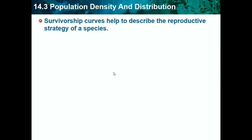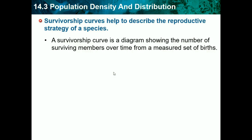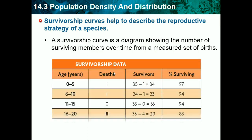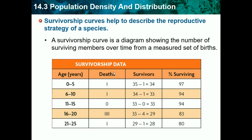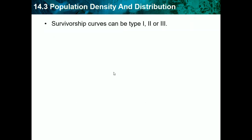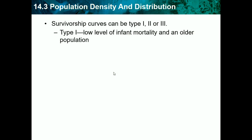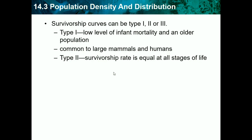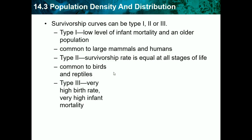Survivorship curves help describe the reproductive strategy of a species — showing the number of surviving members over time. Type 1 has low infant mortality and an older population, common to humans and large mammals that give live births. Type 2 has an equal survivorship rate at all stages of life, common to birds and reptiles. Type 3 has very high birth rates and very high infant mortality, common to invertebrates and plants.